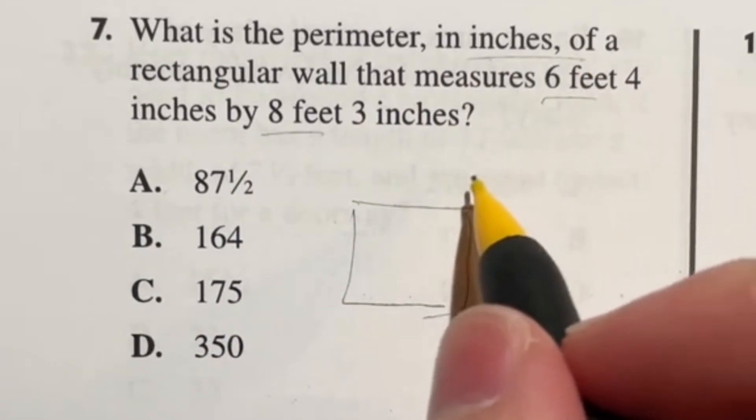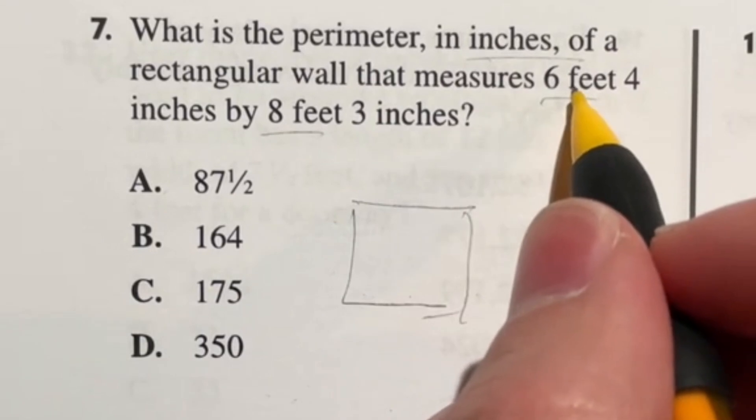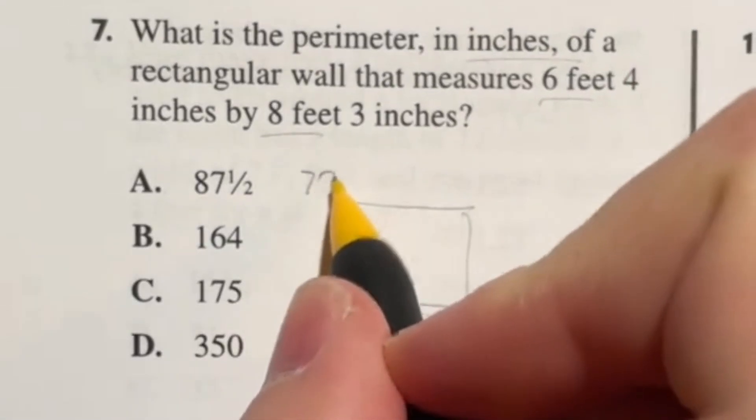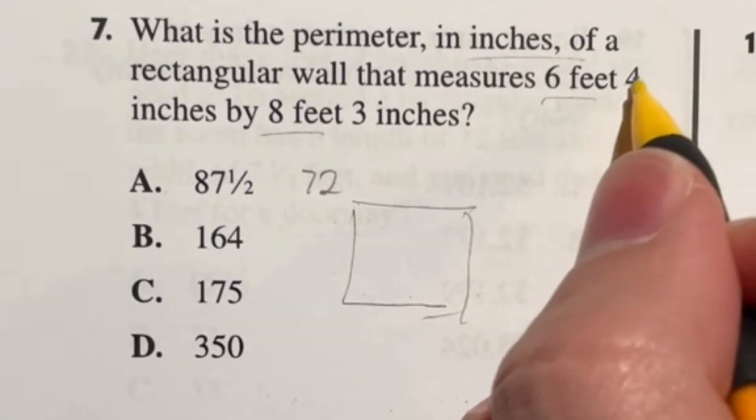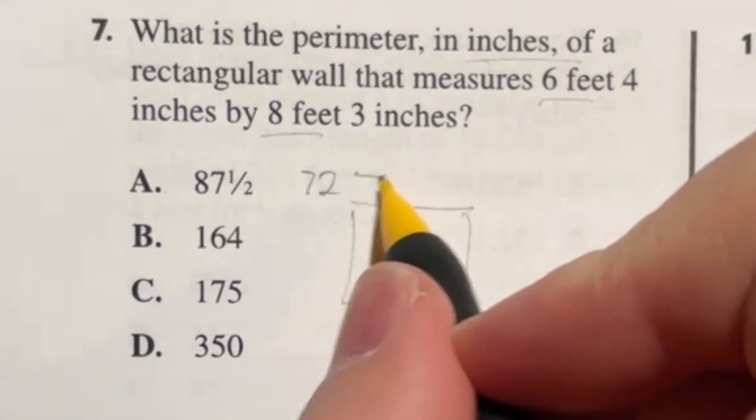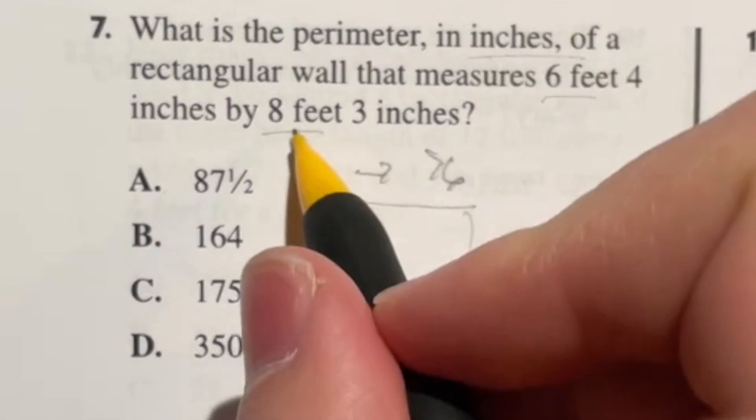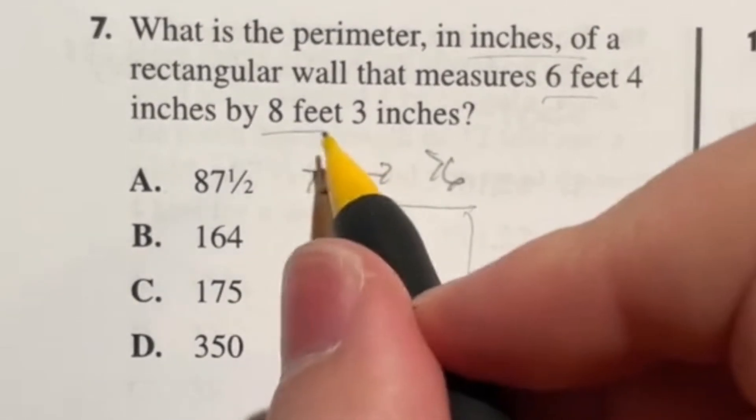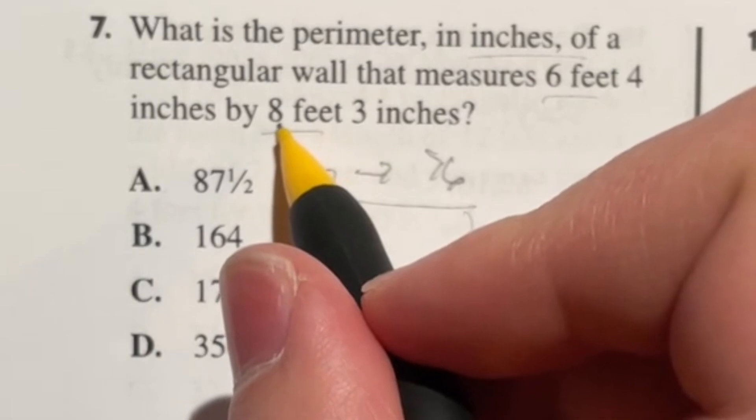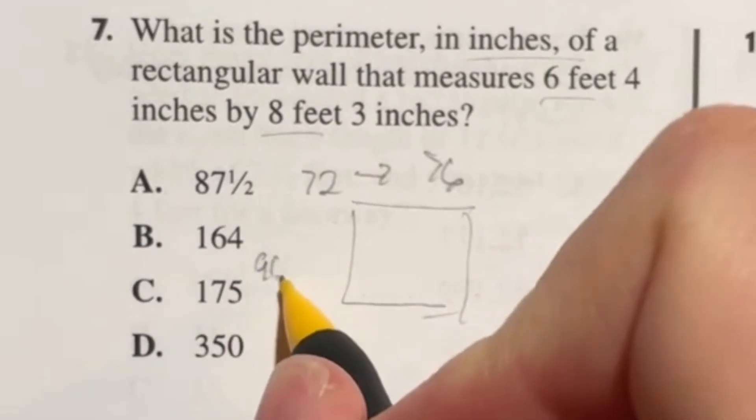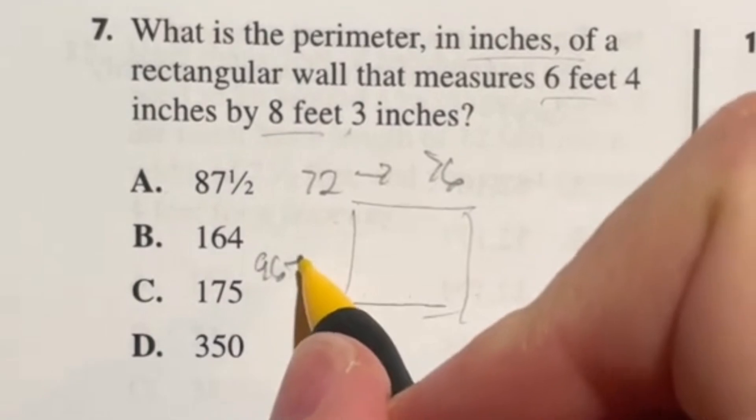If you didn't know, there are 12 inches in a foot. So six times 12 gives me 72. 72 plus that four is going to give me 76 total inches for one side. On the other side, we have eight times 12, which is 96. And then we add that three more to give us 99.